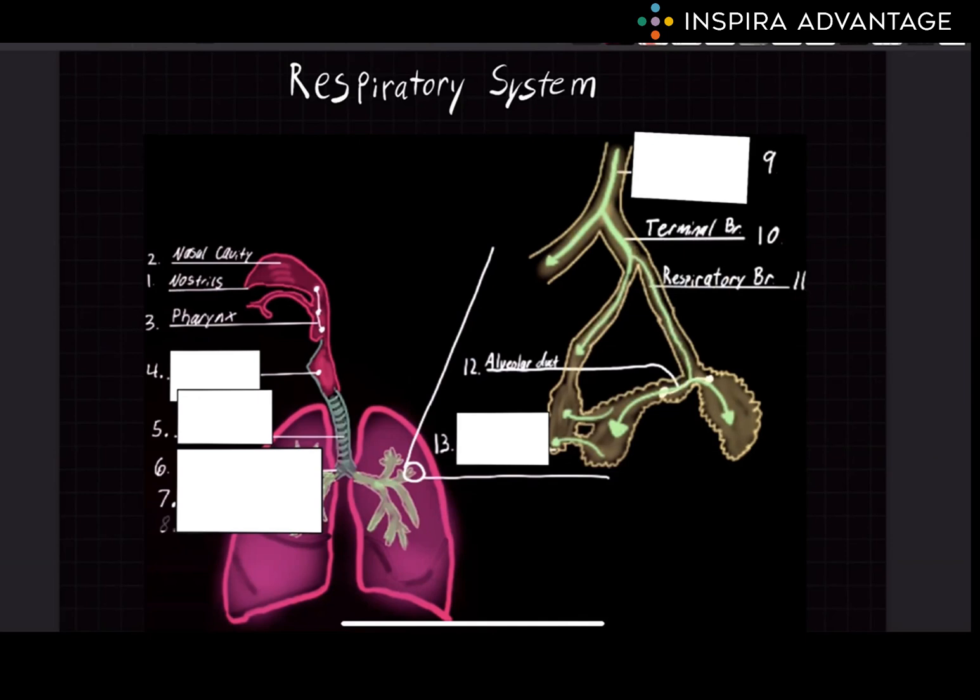So what's the larynx? The larynx, also known as the voice box, is located at the top of the trachea and contains the vocal cords, which produce sound. The trachea, or windpipe, is a tube that connects the larynx to the bronchi and carries air to and from the lungs.